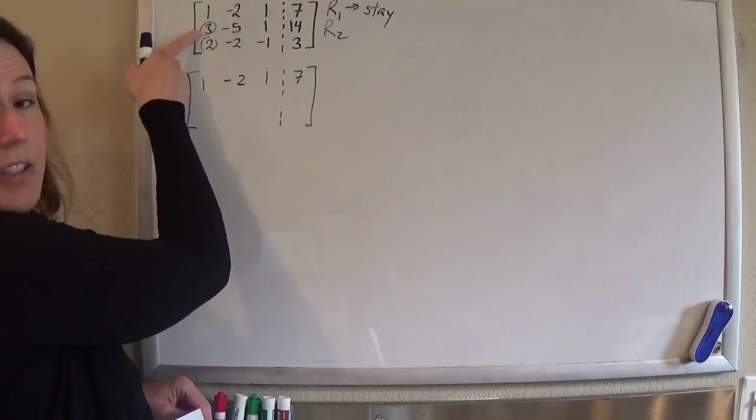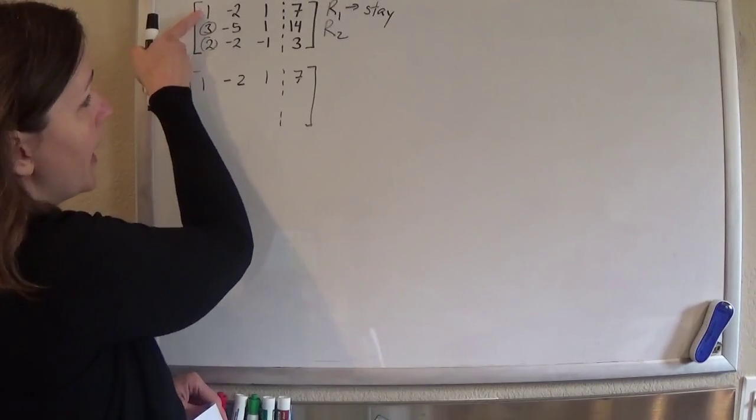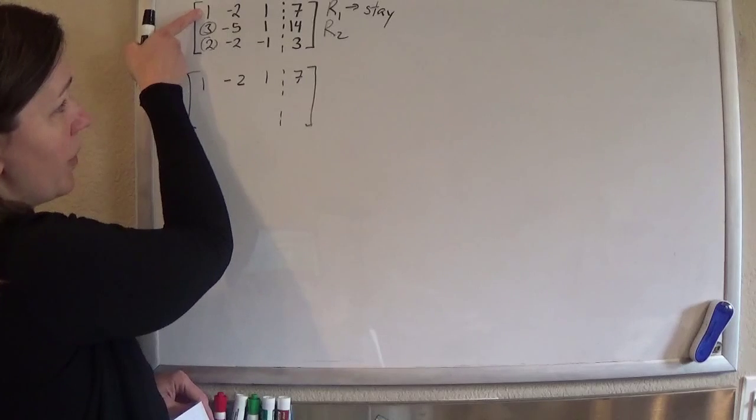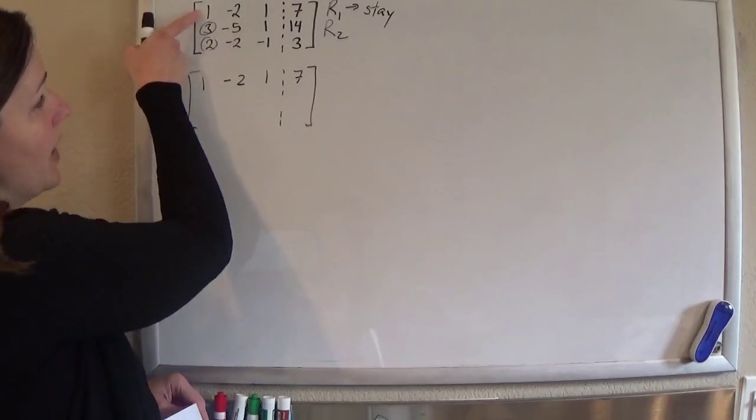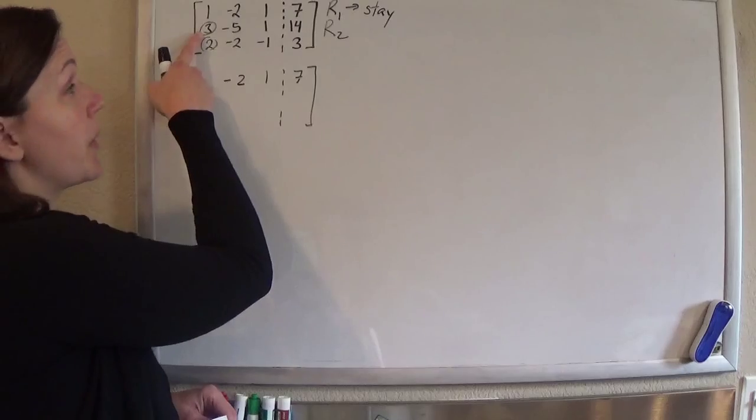So I need to get this 0 first. So I'm going to multiply this by negative 3 and add it to that. So negative 3 plus 3 will get me 0. That's what I want.